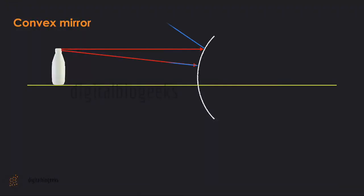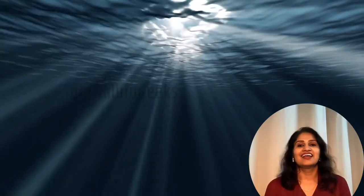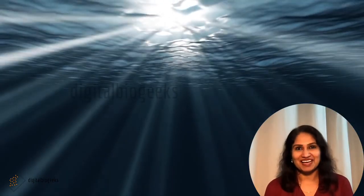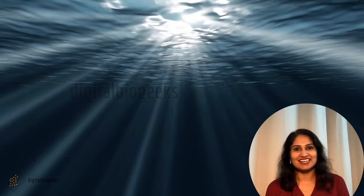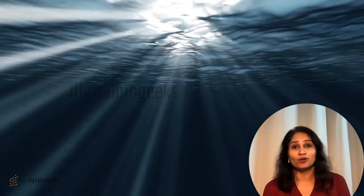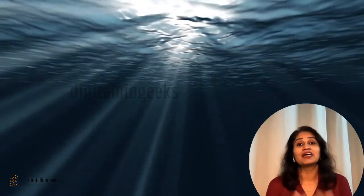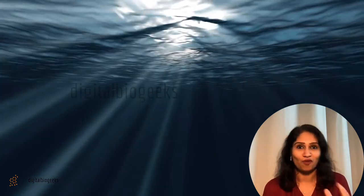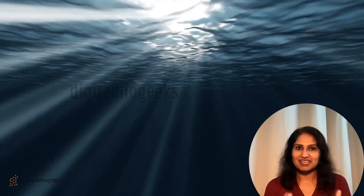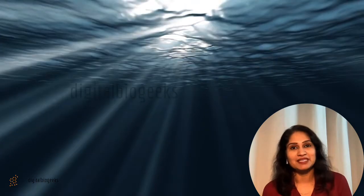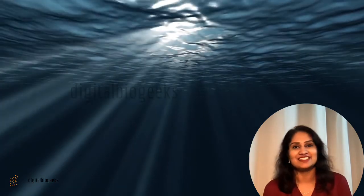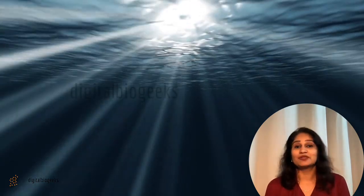The reflected rays from the convex mirror will not meet at a point in front of the mirror; we will always get a virtual and erect image. Hello students, welcome back! If you happen to travel at night in a car or bike, you might have observed that the light from the headlamps of vehicles falls like a beam. Similarly, a beam of light can be seen from a torch and a lighthouse. From these examples we can conclude that light travels in a straight line.